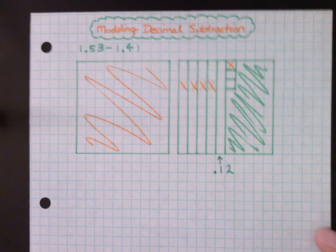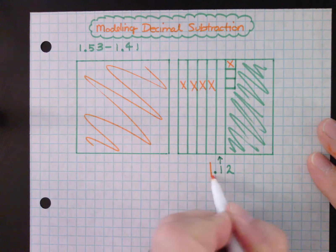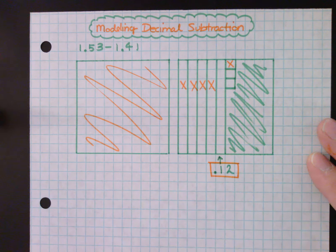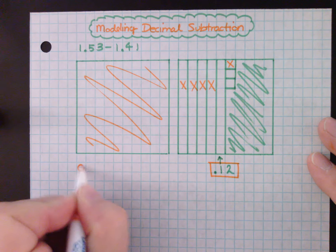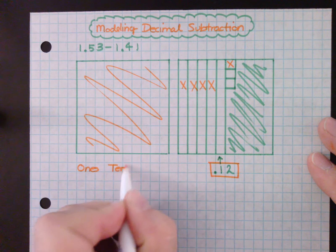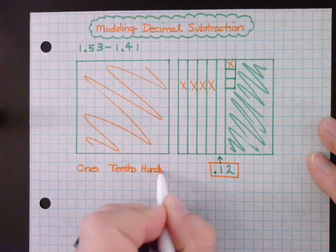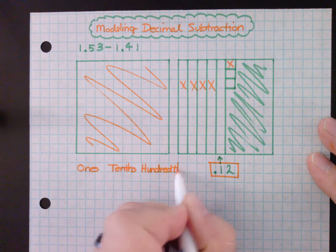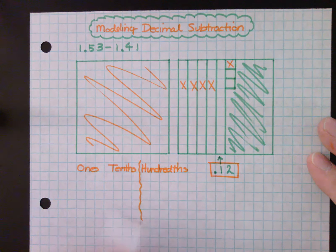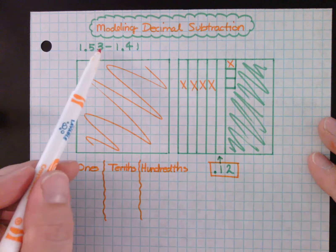If I were to look at my place value, I have the ones, the tenths, and the hundredths. And so I should be able to do the math with this.